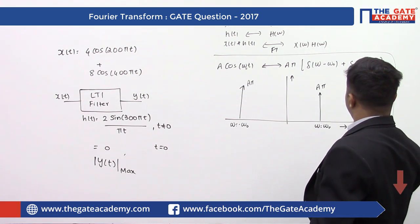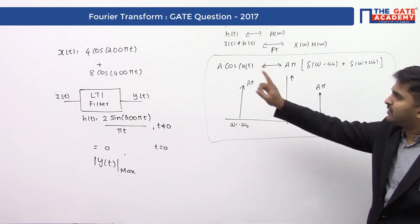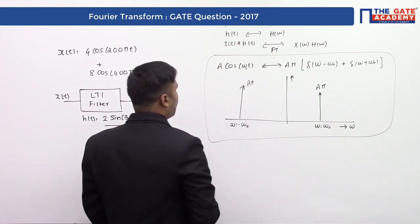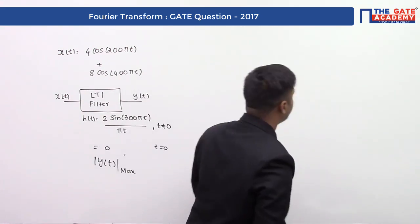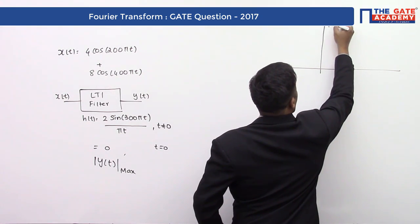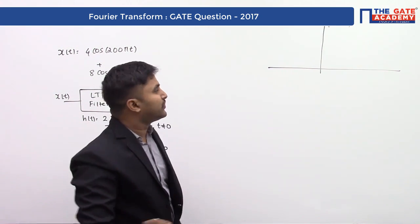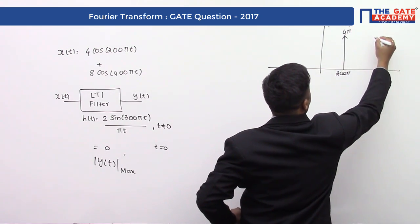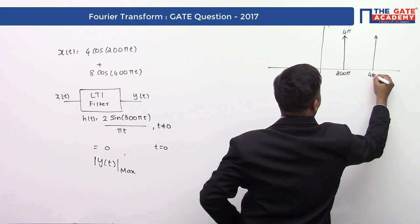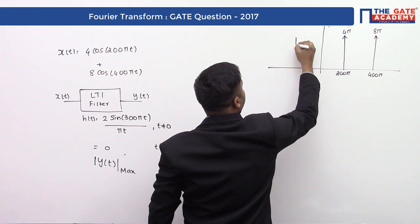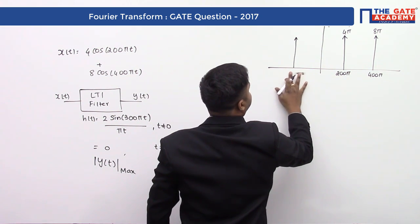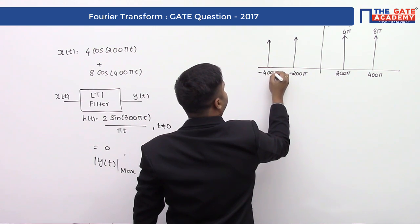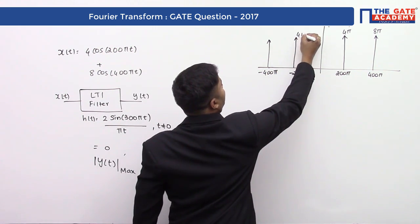This is the basic result required to solve this problem. Our input has two frequencies: one at 200π with amplitude 4, giving impulses of height 4π, and one at 400π with amplitude 8, giving impulses of height 8π. Their mirror images appear at −200π and −400π with the same amplitudes 4π and 8π respectively. This is X(ω).